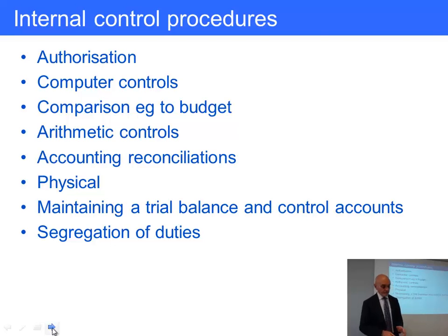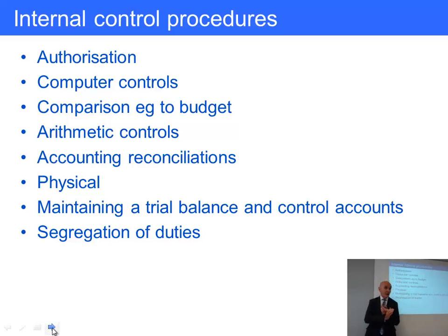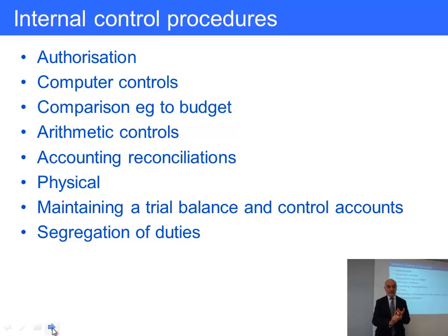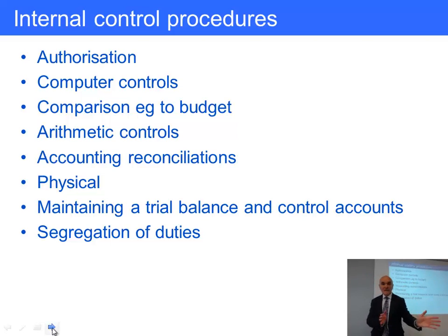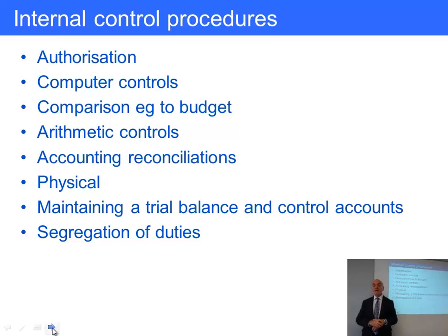Comparison to budget: you have a budget saying expenses this month should be £25,000, but actual expenses are £35,000. Three things might have happened — the budget might be wrong, expenses went up for a good reason, or something is going wrong with the internal control system. Maybe somebody has ordered things twice, or invoices have been put through twice. This disparity signals: let's find out why and make sure it's not due to an error of some sort.